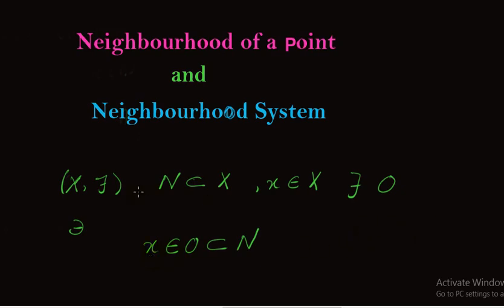To repeat: if we have a topological space (X, τ) and N be any subset of X, then for a point x belonging to X, if there exists an open set O such that x belongs to O and O is a subset of N, then N is called a neighborhood of the point x. For a neighborhood, we need an open set which is a subset of N. If N is itself an open set, then this neighborhood is called an open neighborhood.